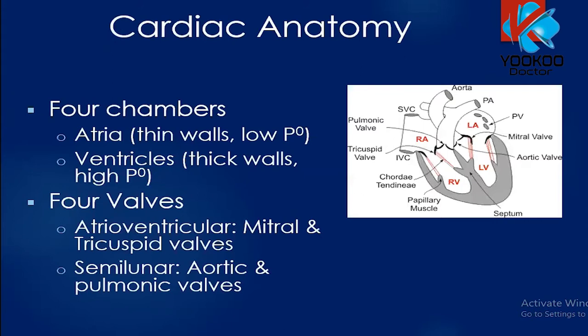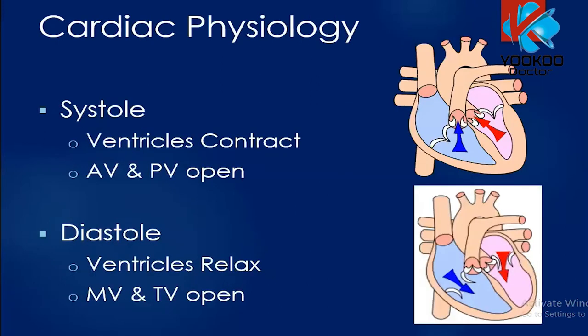Coming to cardiac anatomy, there are four chambers: two atria and two ventricles. The atria have thin walls and low pressure, while ventricles have thick walls and high pressure. There are four valves as well — atrioventricular valves, which are the mitral and tricuspid valves, and semilunar valves, which are the aortic and pulmonic valves, as you can see from the picture.